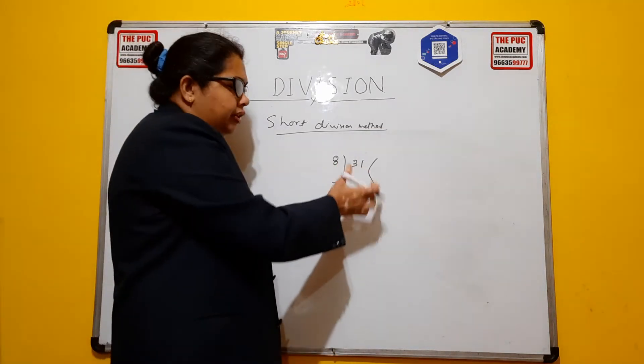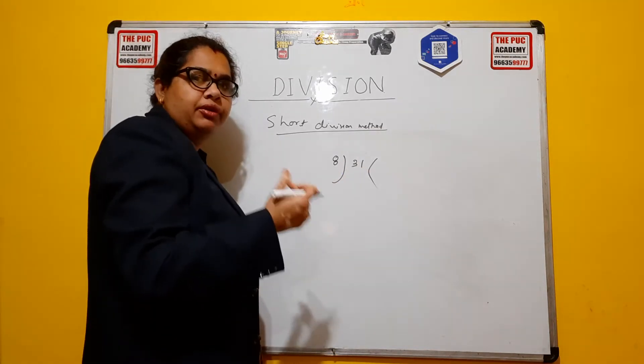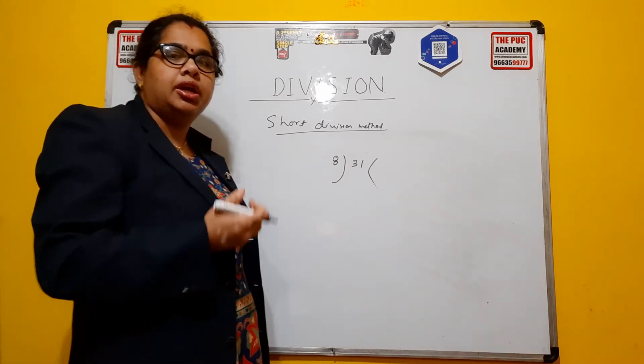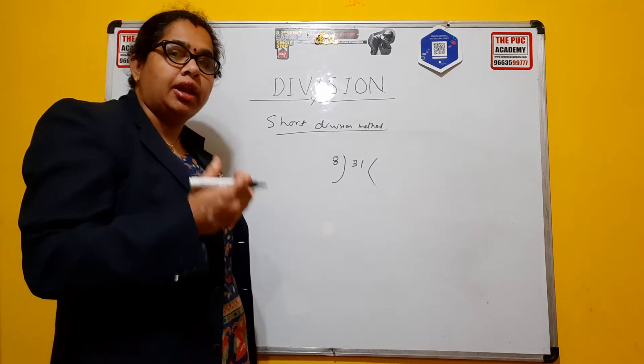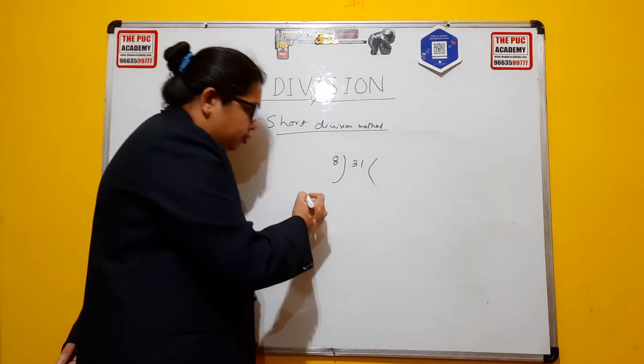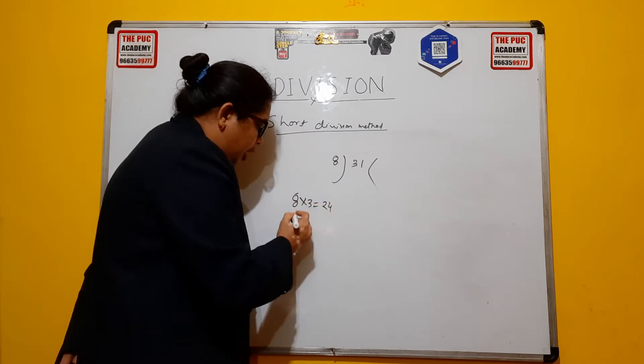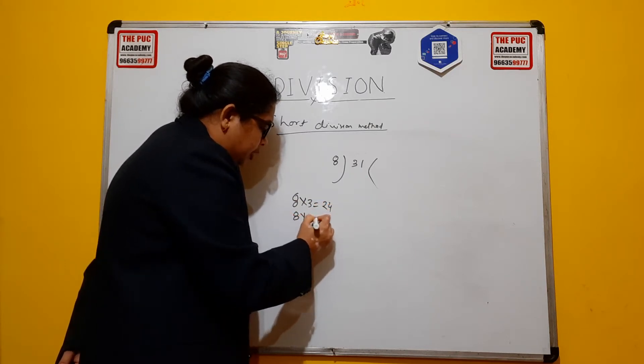So take the number 31 and we start counting the table of 8. 8 times 1 is 8, 8 times 2 is 16, 8 times 3 is 24, and 8 times 4 is 32. So you see here, 8 into 3 is equal to 24 and 8 into 4 is 32.